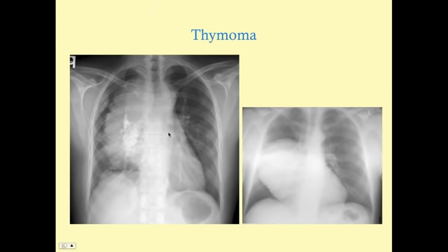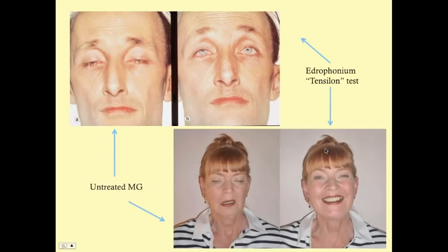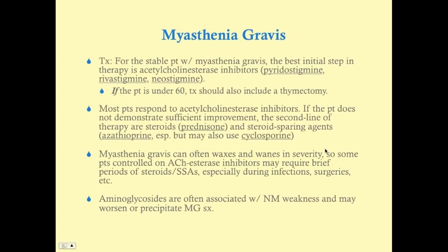Thymomas are commonly associated with myasthenia gravis and should be looked for on imaging. The edrophonium test is classically mentioned and good to know, but for the USMLE it is not used as a treatment or primary mode of diagnosis. The best initial test remains the anti-acetylcholine receptor antibody titer, and the most accurate test is the EMG.